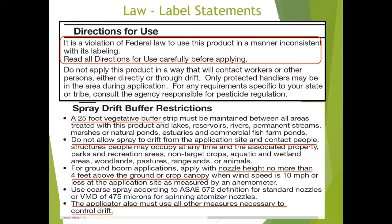Here are some basic label statements. If you've made applications and read the label, you've seen something like: it's a violation of federal law to use this product in a manner inconsistent with its labeling — read all directions carefully before applying. Labels also specify application requirements, such as a 25-foot vegetative buffer strip that must be maintained. Essentially all these statements come down to: no drift, don't drift, make sure you stay on target, and check meteorological conditions.